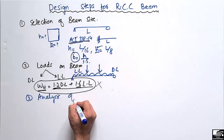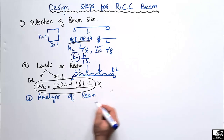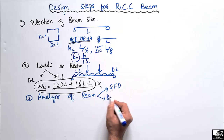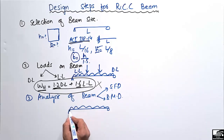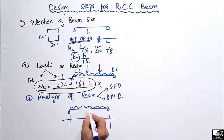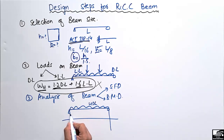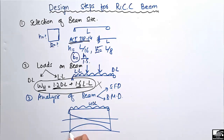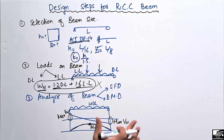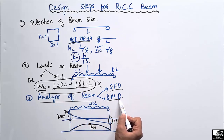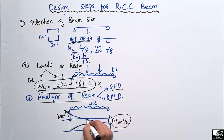The third step is the analysis of the beam. By analysis we mean drawing the shear force diagram and the bending moment diagram for the beam. For a beam subjected to a uniformly distributed load, we draw the shear force diagram and bending moment diagram to find the maximum shear and maximum bending moment. The main objective is to identify the maximum shear value and maximum bending moment value from these diagrams.